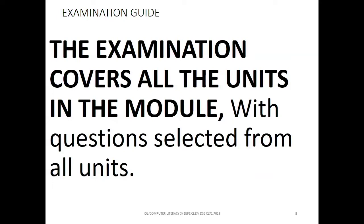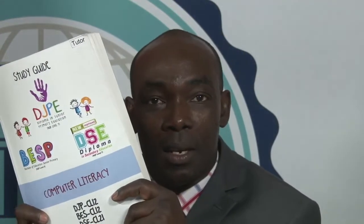Where will the questions come from? They will come from the module. Computer Literacy 2 has Units 1 through 8 in the study guide, and the questions cover all of these units. Do not ignore or look down on any unit assuming questions won't come from it. Prepare yourself around the whole module with all the units.